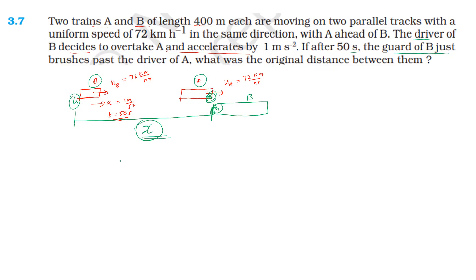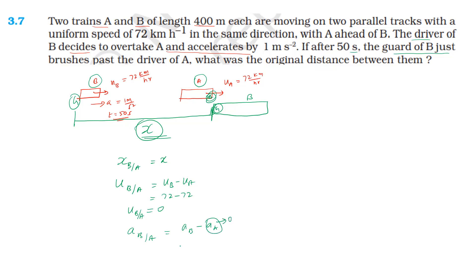For relative motion, the relative initial velocity of B with respect to A is velocity of B minus velocity of A: 72 minus 72 = 0. The relative acceleration of B with respect to A is acceleration of B minus acceleration of A: 1 minus 0 = 1 meter per second squared.